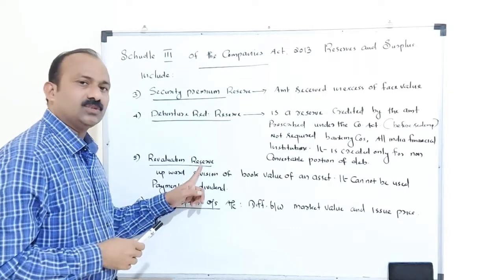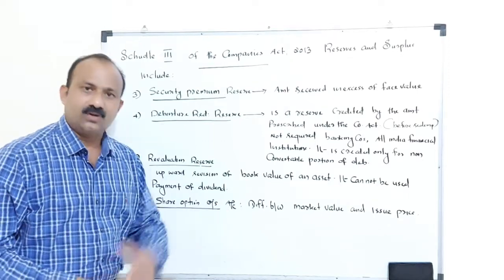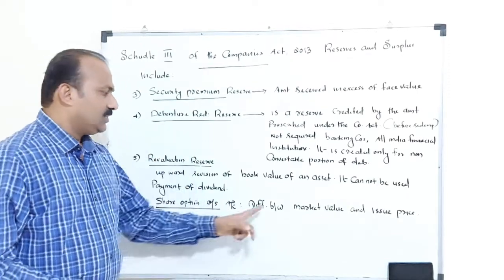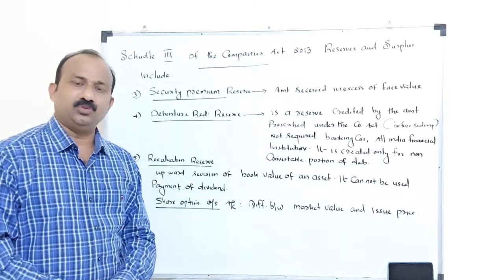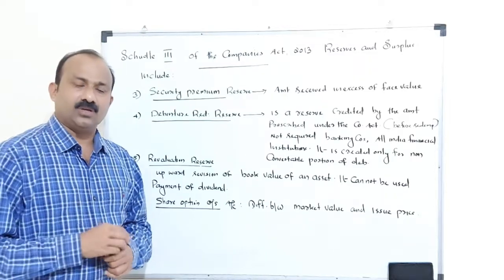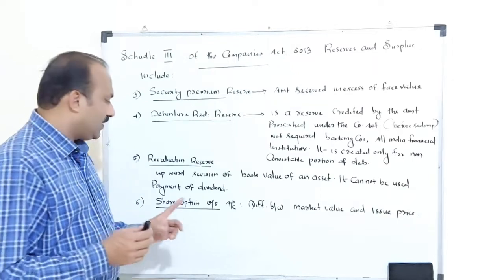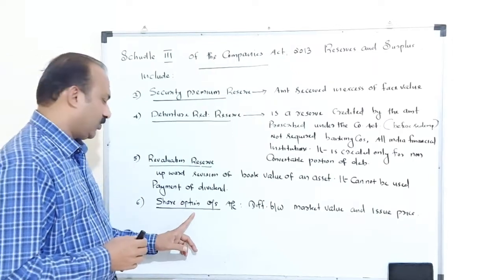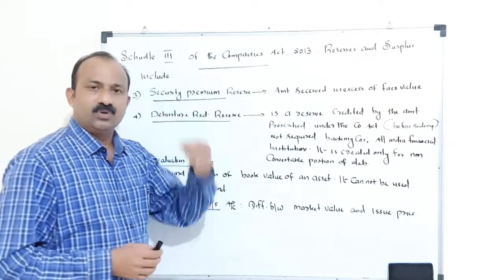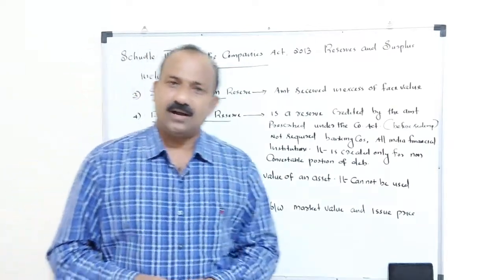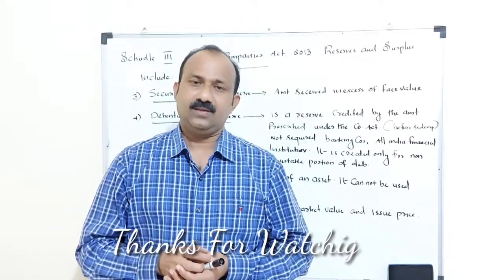Share option outstanding account is also one kind of reserve. This is the difference between the market value and the issue price. For example, if the issue price is 50 and the market value is 100, there is an excess amount which is kept in a separate account known as share option outstanding account. These are the important reserves coming under the heading equity, that is reserves and surplus. There are many reserves, and each serves a distinct purpose. Thank you.